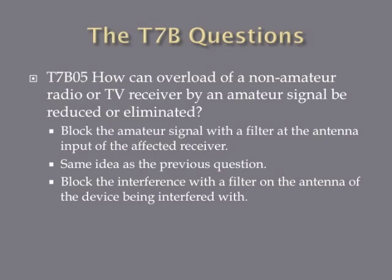How can overload of a non-amateur radio or TV receiver by an amateur signal be reduced or eliminated? The answer is to block the amateur signal with a filter at the antenna input of the affected receiver. It's the same idea as the previous question — find the affected AM/FM broadcast radio or TV receiver and put a filter on the antenna to filter out the amateur signal that's causing the interference.